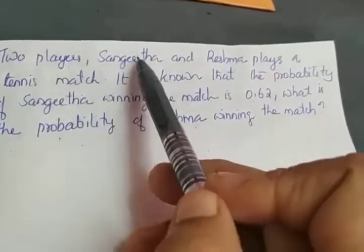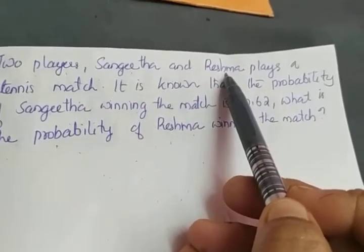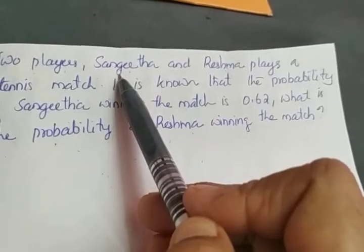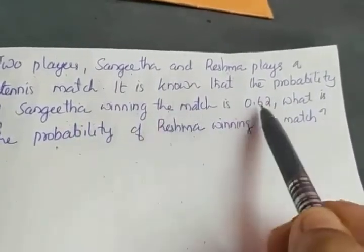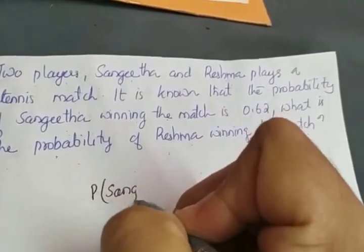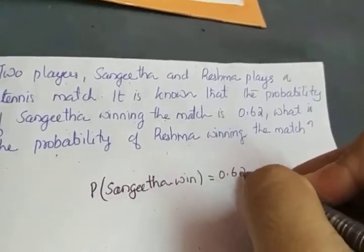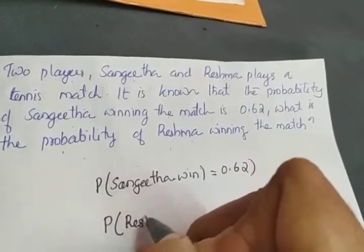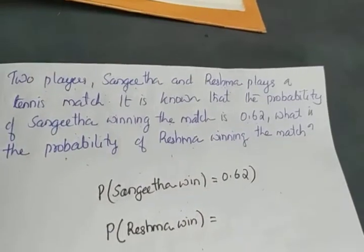There are only two players, Sangeeta and Reshma. If Sangeeta wins, automatically Reshma loses the game. In the reverse way, if Reshma wins, Sangeeta will lose the game. The probability of Sangeeta winning the match is given as 0.62. We have to find the probability of Reshma winning. Reshma wins when Sangeeta fails.